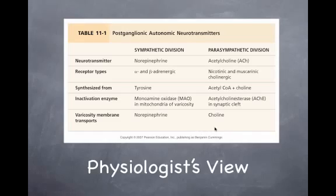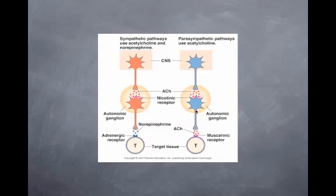Recalling that the efferent neuron number one is the same in both divisions, it really comes down to neuron number two. This is basically how the sympathetic and parasympathetic divisions are different. What we're going to do is look at the critical figures in Chapter 11 that kind of summarize how the ANS does its job.